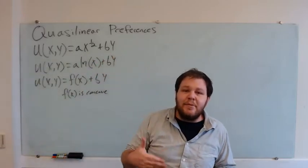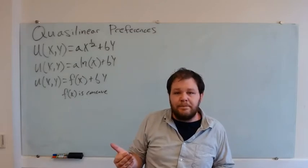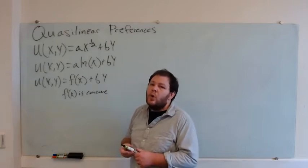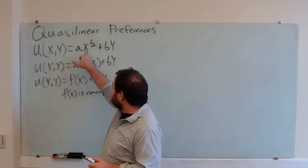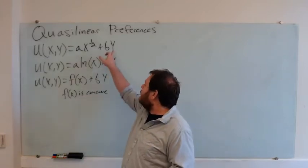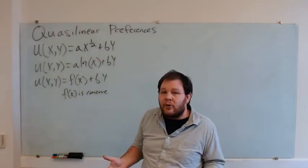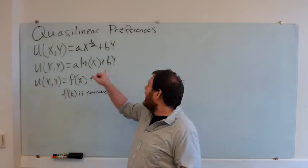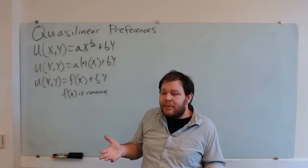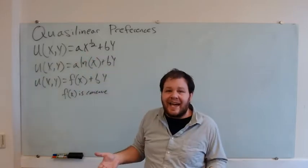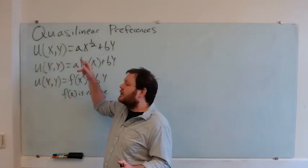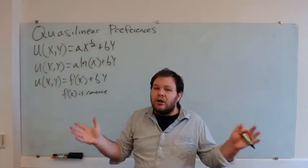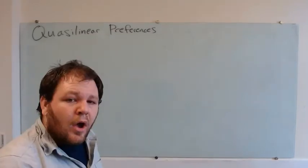Each unit of y is providing us the same amount of utility as before. So these sorts of preferences we often use when we really care about x — x is some good where we have diminishing utility, and y is some representative of every other good. So if we wanted to say something like how much bubble gum are you going to buy and how much cash are you going to keep, we might say x is bubble gum and y is cash. Any other particular thing for x — how many copies of The Hunger Games are you going to buy versus how much of all other stuff?